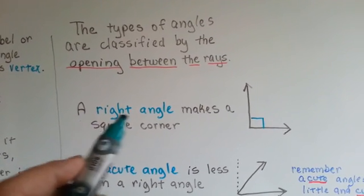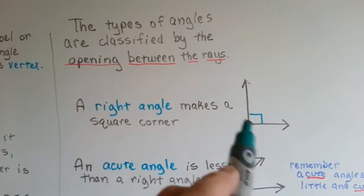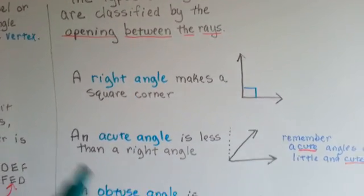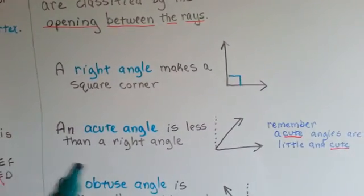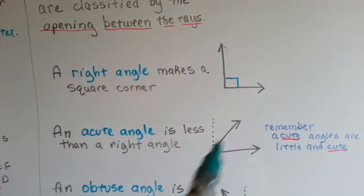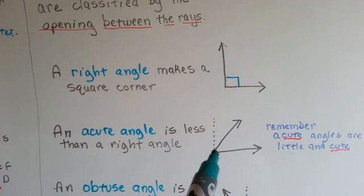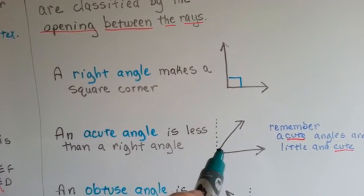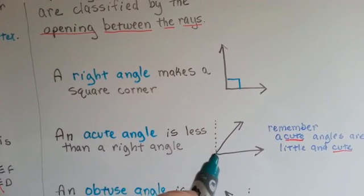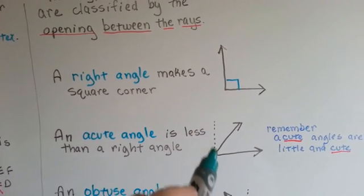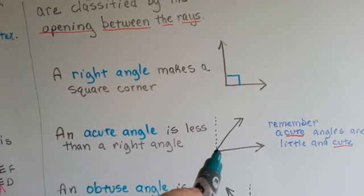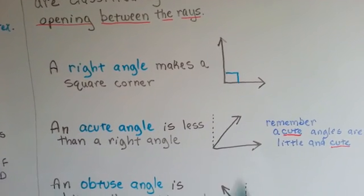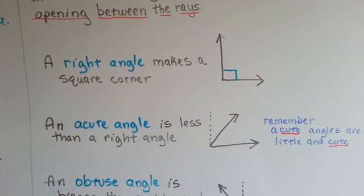A right angle makes a little square corner. An acute angle is less than a right angle. The right angle would have been here, so anything less than this dotted line — even just right on this side of it — would still be an acute angle.